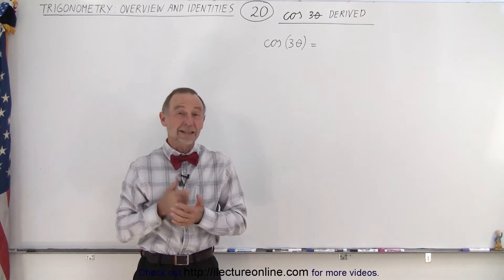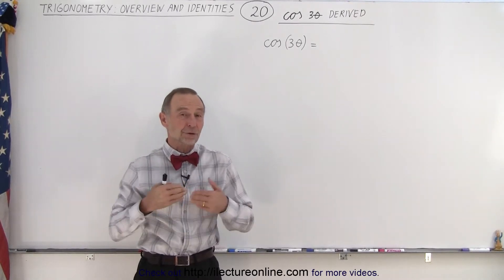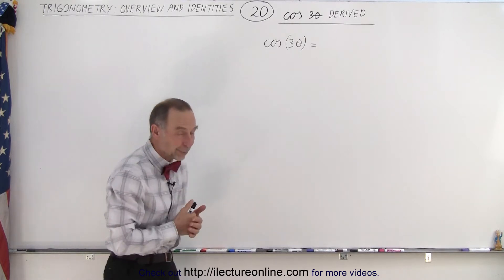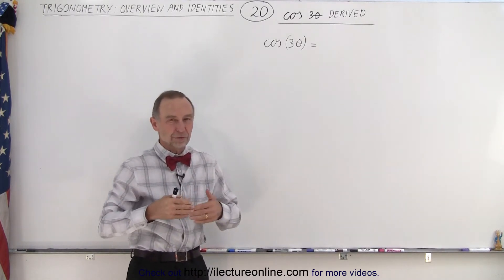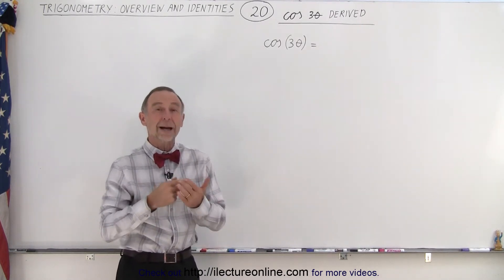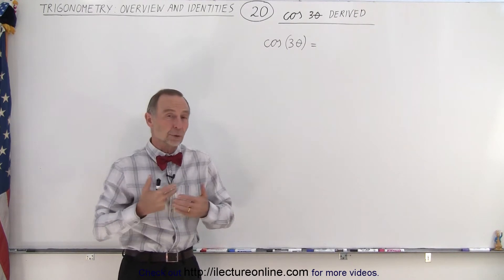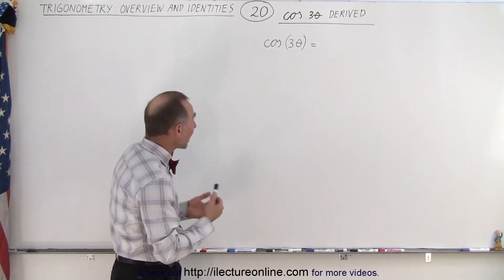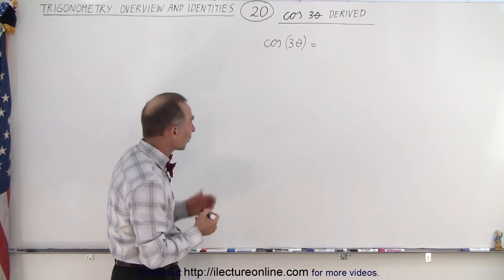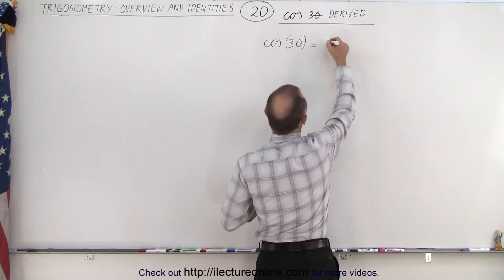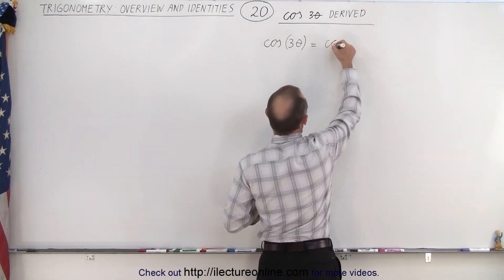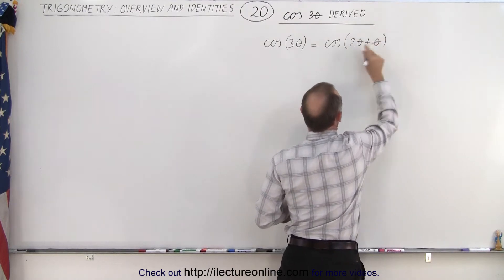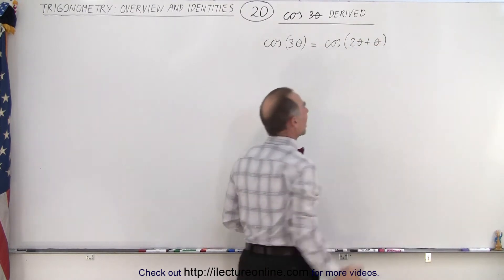Welcome to our Lecture Online. In this video we're going to find an expression for the cosine of three times the angle in terms of the cosine and the sine of just one time the angle, using the identity for the sum of angles for cosine and sine. We're going to write it as the cosine of two theta plus theta, so we have it as the sum of two angles.